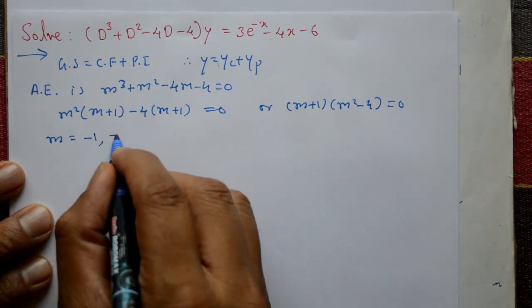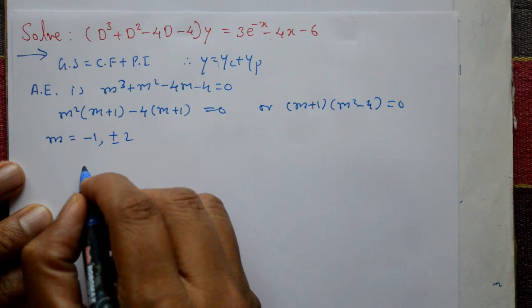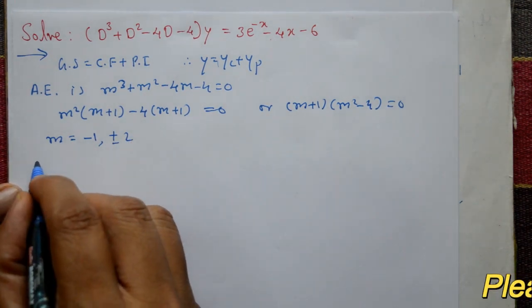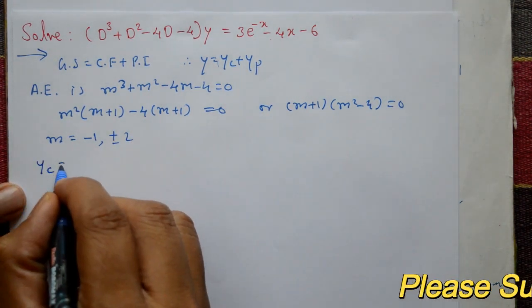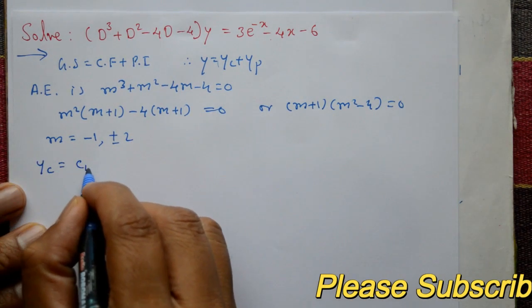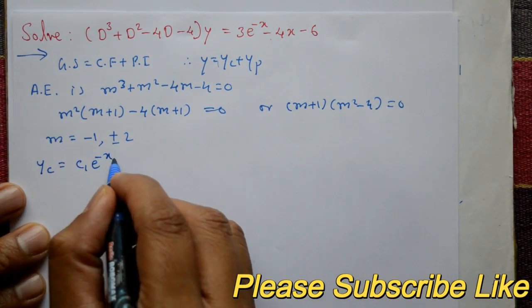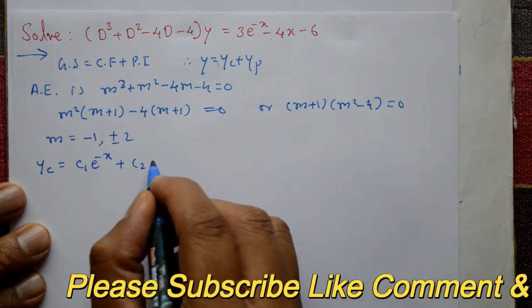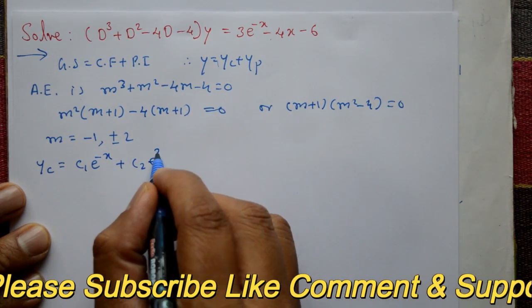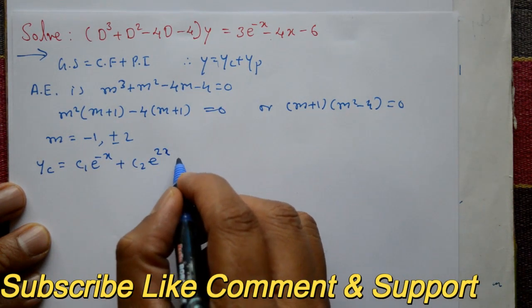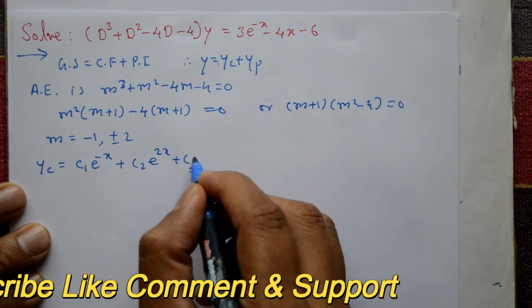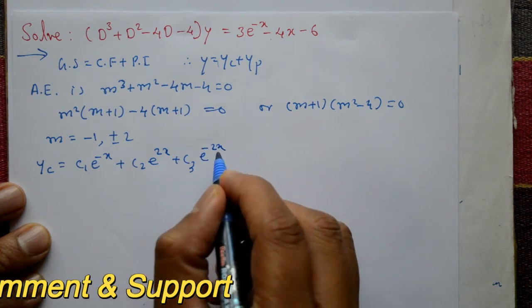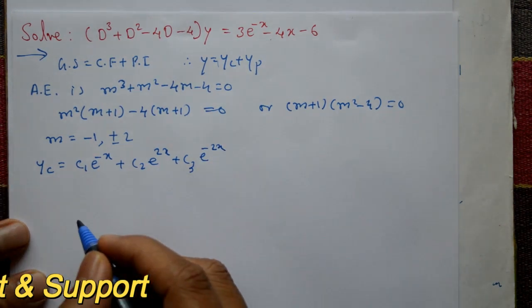The roots are different. The complementary function is yc = c₁e^(-x) + c₂e^(2x) + c₃e^(-2x).